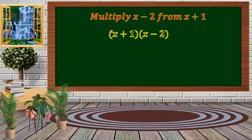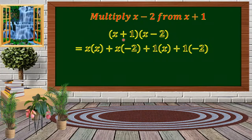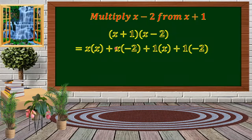In this case, we're just going to distribute term by term. We have x times x as the first, then x times 2, then the product of 1 and x, and the product of 1 and negative 2. This is called the FOIL method.